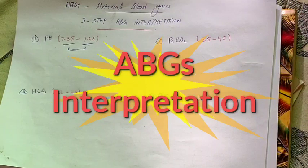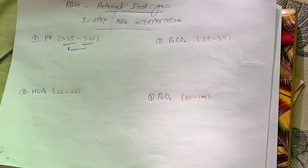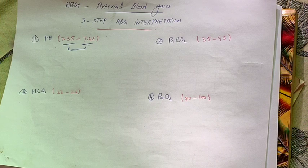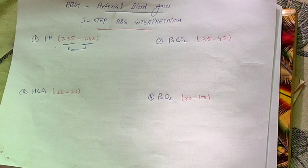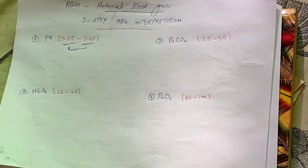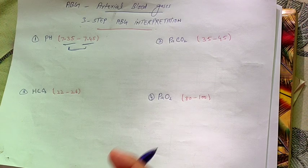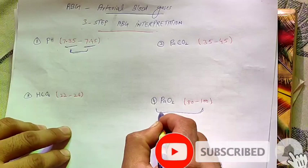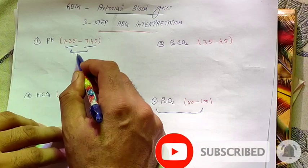Hello everyone, welcome to our new video which will be about arterial blood gases — usually we call it ABGs. ABG stands for arterial blood gases, and I will tell you a three-step formula for the interpretation of arterial blood gases. First of all, we'll look at the normal values of pH, pCO2, HCO3, and PaO2. PaO2 is a bit less important and we'll come to it at the end.